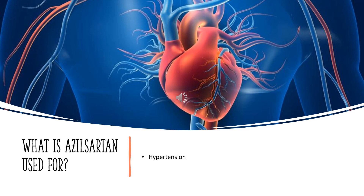Azulsartan medoxomil belongs to the angiotensin receptor blocking (ARB) class of drugs, which are used to decrease the progression of moderate to severe albuminuria and prevent the recurrence of atrial fibrillation as off-labeled uses in patients with diabetes mellitus and hypertension.